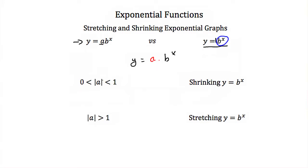If the absolute value of our a is between 0 and 1, then we have some fraction. And if we multiply our b to the x value by some fraction, then our y value is going to shrink. And if our y value gets smaller, then we're going to shrink the graph of y is equal to b to the x. Our y values are going to get smaller, so vertically our graph is going to shrink.